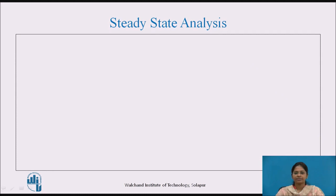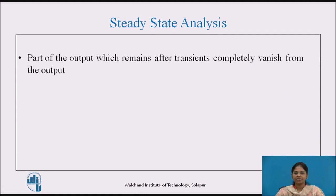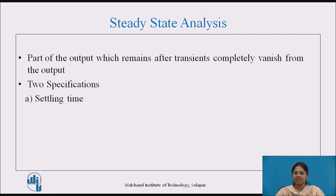Steady-State Analysis: Steady-state is that part of the output which remains after the transients completely vanish from the output. The steady-state response mainly has two specifications: how much time the system takes to reach its steady-state, which is called settling time, and how far away the actual output is from its desired value, which is called steady-state error, given as E_ss.